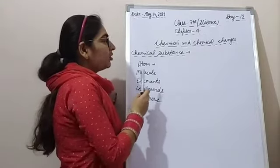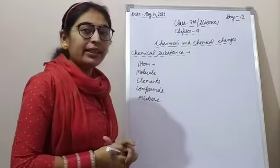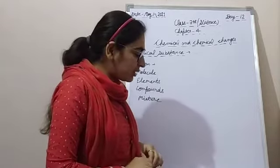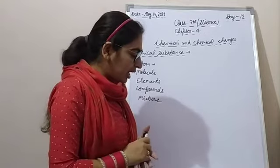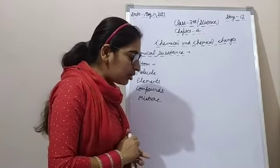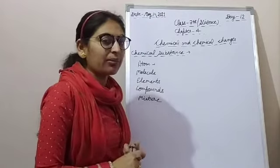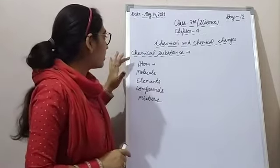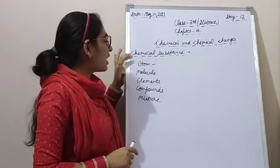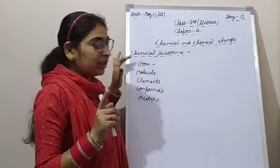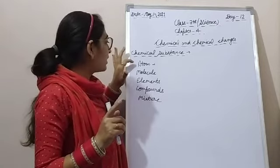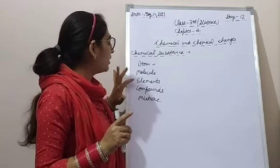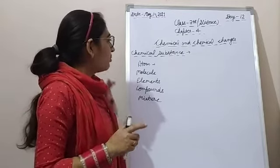Today we are going to start this chapter. In this chapter you will learn about chemical symbols, chemical substance, atomicity, chemical formula and compound, chemical equation and chemical changes. In this video we will discuss chemical substance, atom, molecule, elements, compound and mixture.